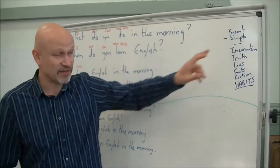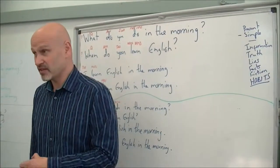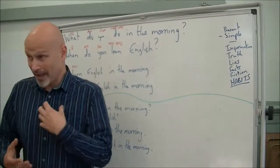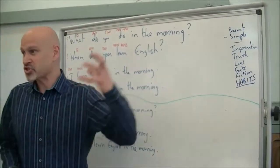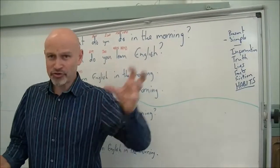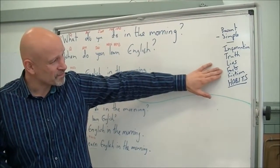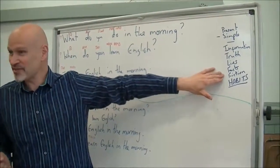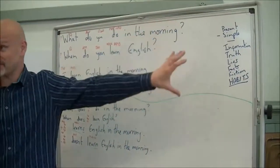We use present simple to talk about information about ourselves — I am Mike, I am a teacher, I live in Chesham. We use it to talk about truth, how I feel about certain things, like I hate politics, I love to swim in the morning. We talk about lies — the earth is not square, that's not truth. We talk about facts, the sun is big. We talk about fiction, and of course we talk about habits as well.